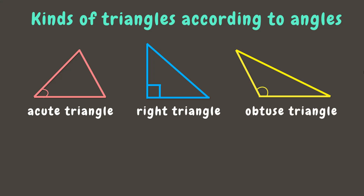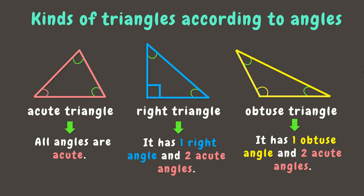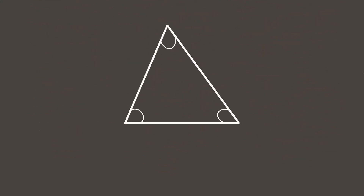In an acute triangle, you can notice that all angles are acute, meaning they are all less than 90 degrees. In a right triangle, you can see that it has one right angle and two acute angles. In an obtuse triangle, we can see that it has one obtuse angle and two acute angles. We can notice that all angles of this triangle measure less than 90 degrees, which means they are all acute angles. Therefore, we can say that this is an acute triangle.